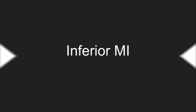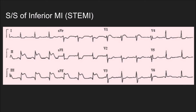Hello and welcome to ShadeTree Cardiology. This video is going to cover the basics of the inferior MI. The first thing we notice when looking at an inferior wall MI — an inferior STEMI — is a giant ST elevation in leads 2, 3, and AVF, along with reciprocal depression in leads 1 and AVL.